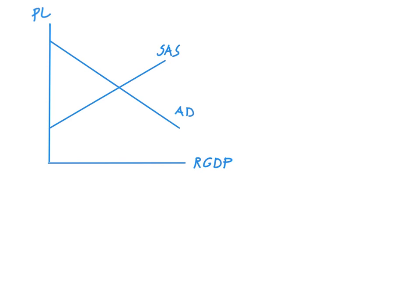Let's go ahead and put in our equilibrium and map it out to both of its bits of information — our starting point related to price level and our starting point related to real GDP. For a principles of economics course, generally what we're interested in is direction and movement, not magnitude of the movement. So putting numbers to these locations is not that important.